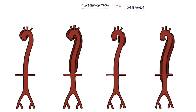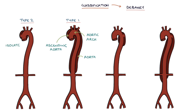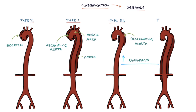With the DeBakey system, a type I dissection is where it begins in the ascending aorta and involves at least the aortic arch, if not the whole aorta. A type II dissection is when the dissection is isolated to the ascending aorta. A type IIIa dissection refers to when it begins in the descending aorta and involves only the section above the diaphragm. A type IIIb dissection refers to when the dissection begins in the descending aorta and extends below the diaphragm.